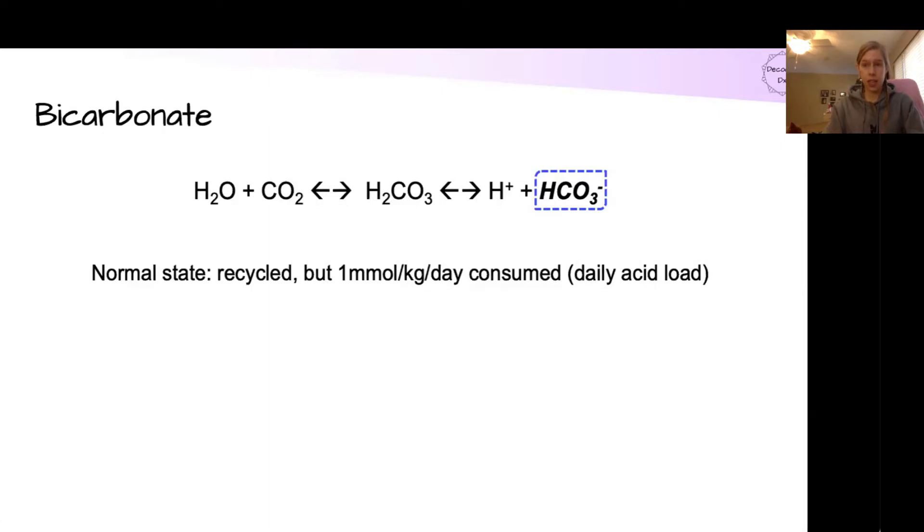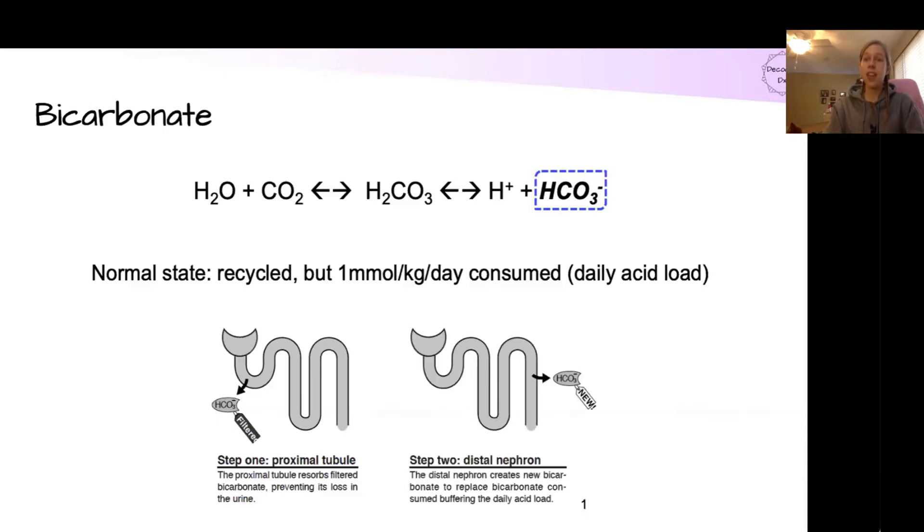That bicarbonate is critical to be recycled, but one millimole per kg per day is consumed to buffer that daily acid load. How is that recycled though? Two main processes in the kidney. In step one, the proximal tubule is going to reabsorb all of the bicarbonate that is filtered. Again, in a healthy nephron, all of the bicarbonate that comes through the glomerulus is going to be reabsorbed. And then in the distal nephron, extra bicarbonate is going to be produced to replace that one millimole per kg per day. Again, this is in a healthy nephron.